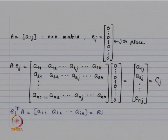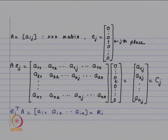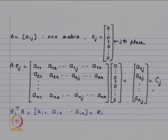Some notation: A is our n×n matrix, e_j is the canonical vector with 1 at the jth place and 0 elsewhere. When you look at A times e_j, that gives us the jth column of A: [a_{1j}, a_{2j}, ..., a_{nj}]. In a similar manner, e_i^T A gives us the ith row: [a_{i1}, a_{i2}, ..., a_{in}].